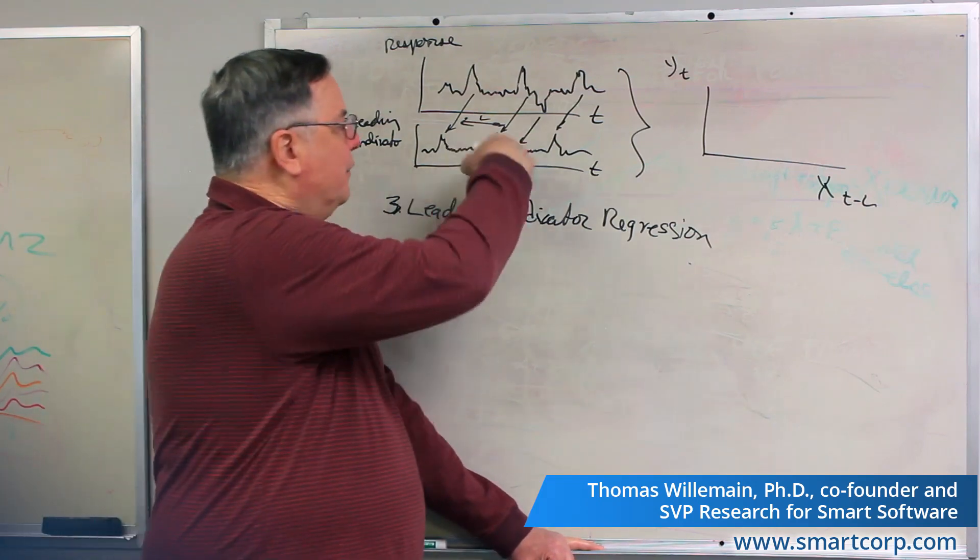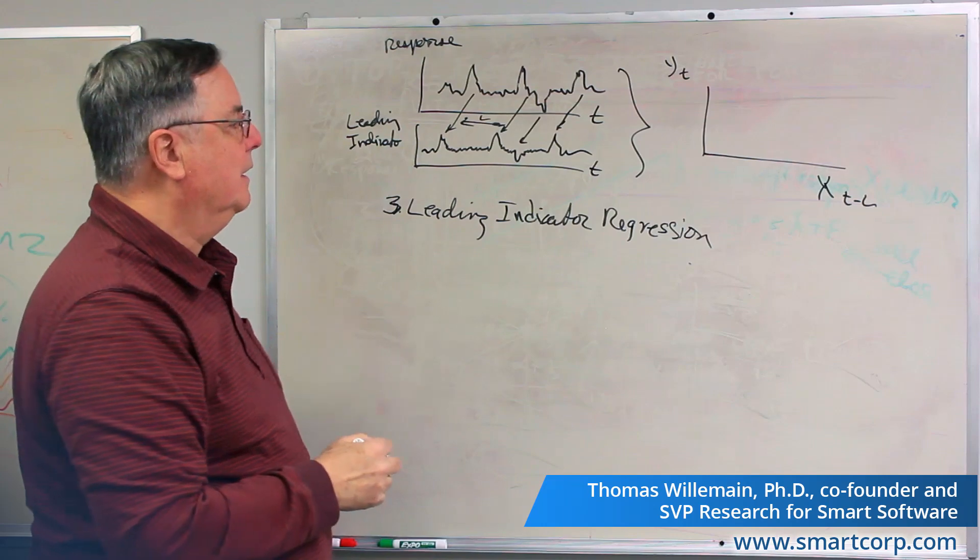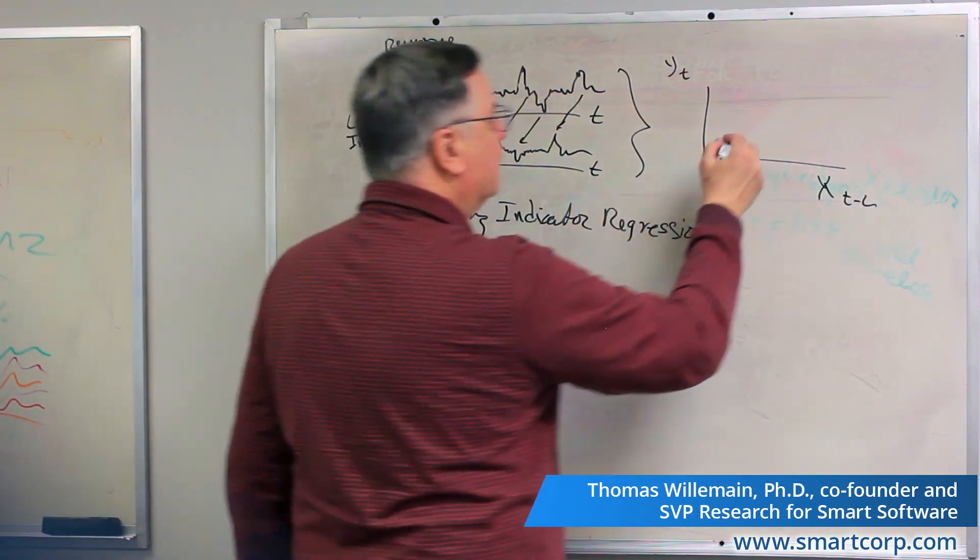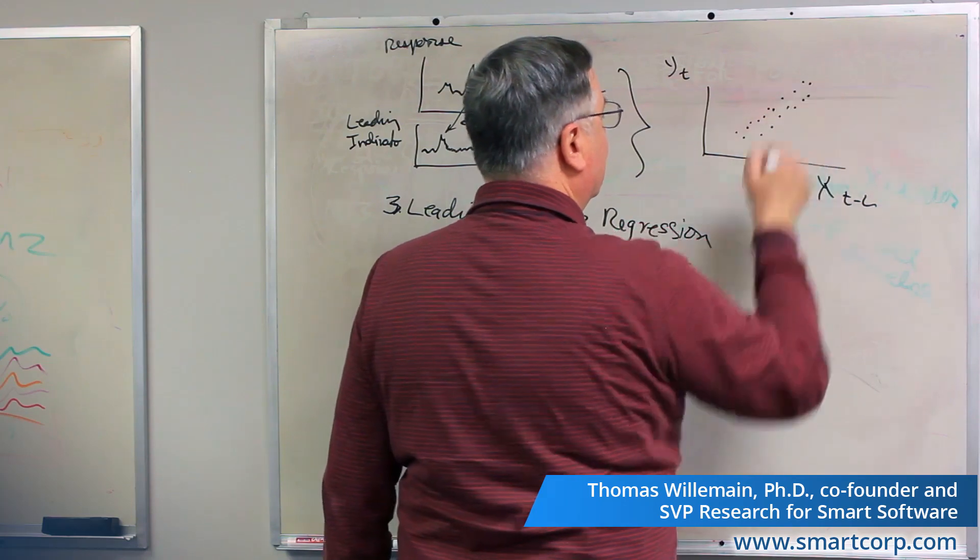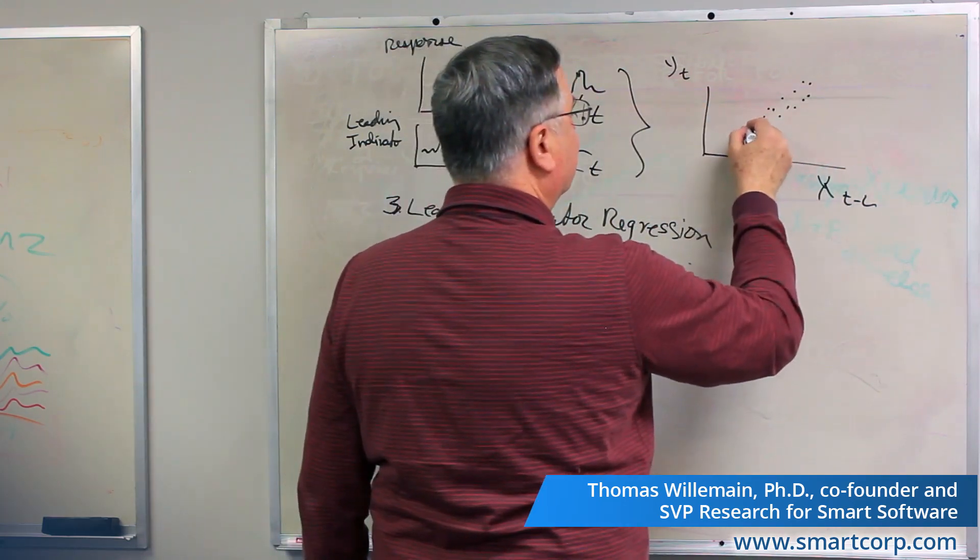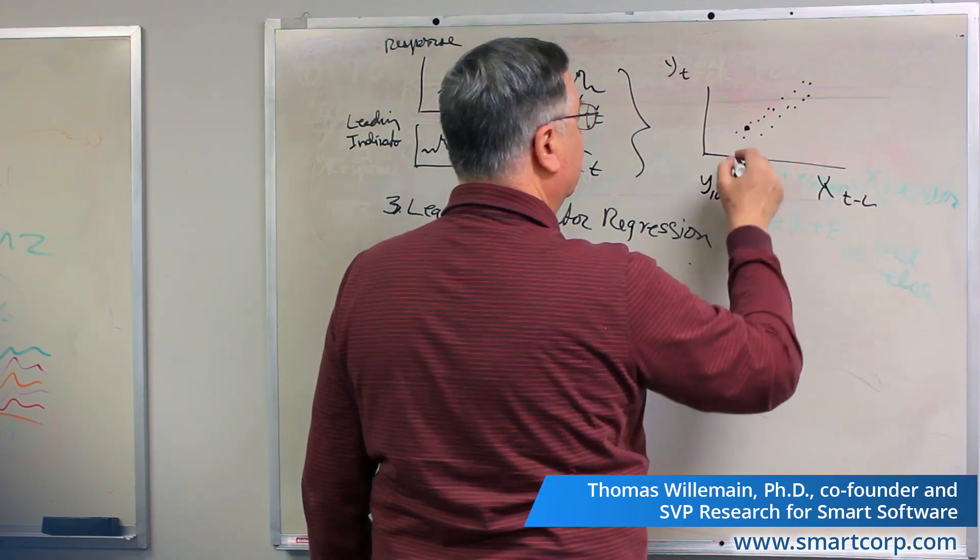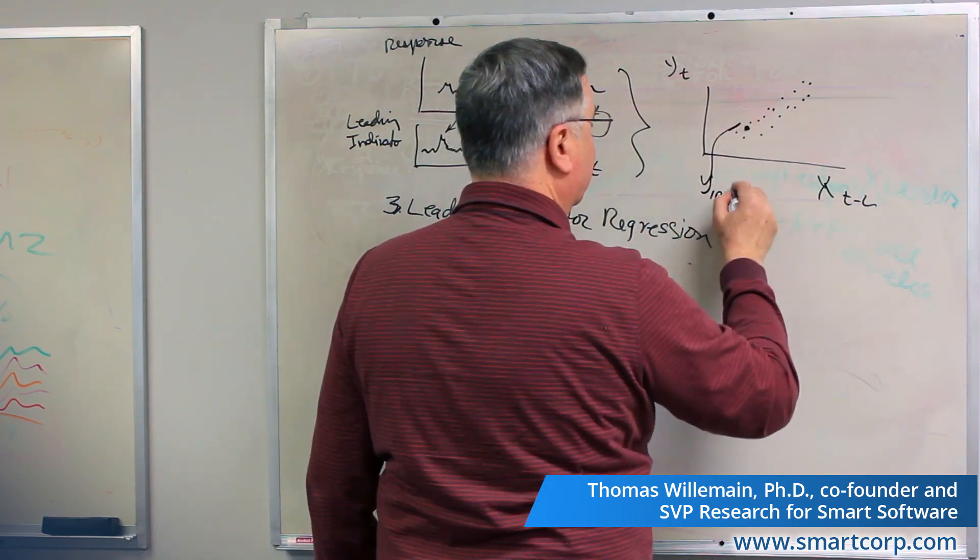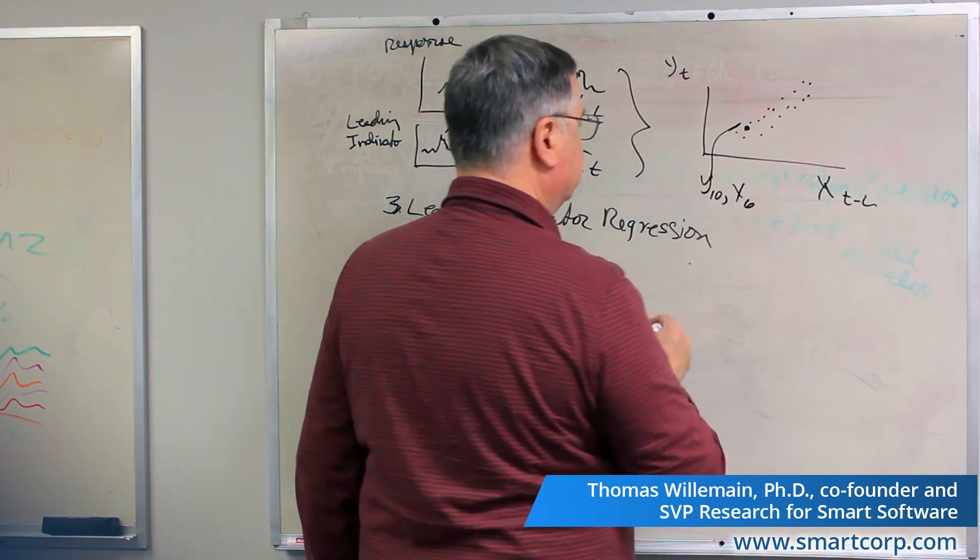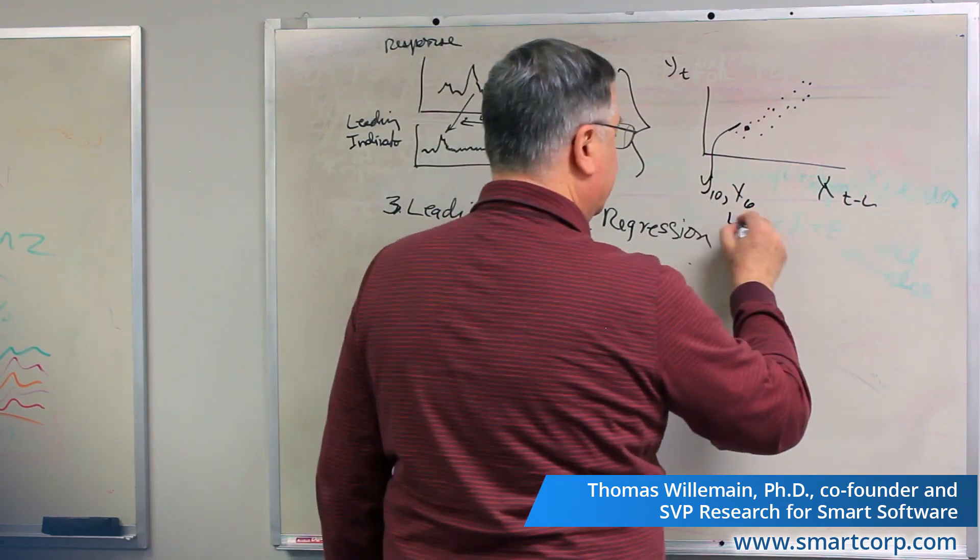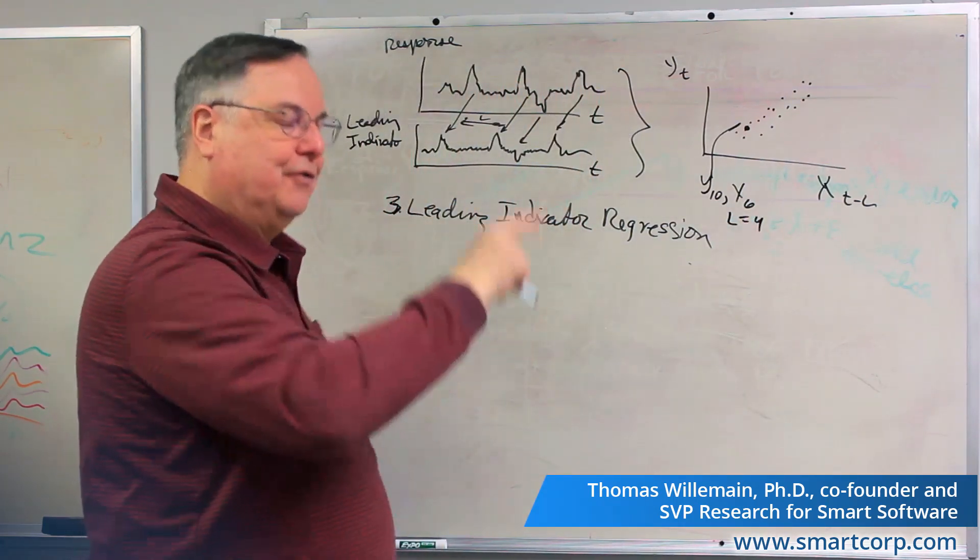And the graphical picture of the two time series might look something like that, and the scatter plot would look like our familiar kind of situation, only this might be, for instance, this particular point might be Y at time 10, and it also might be X at time 6. And so in this case, L would be 4. There's a four-month lag between the cause and the effect.